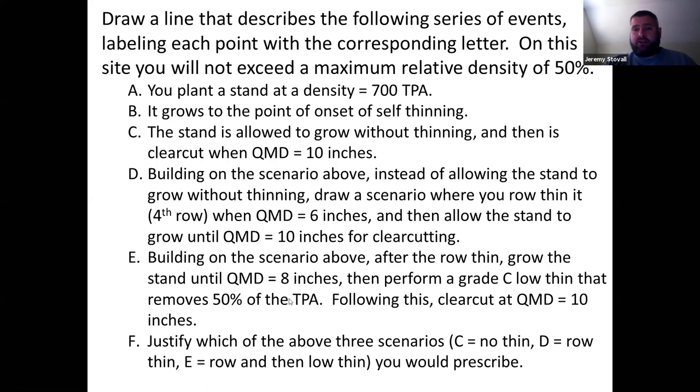Go back to the lecture notes for a couple Thursdays ago. The Thursday we were originally going to do this lab, that lecture in the morning. Go back to that lecture, look at the slides, or go back to the video of the lecture, and I highlighted what you need to know in that video about how a grade C low thin will impact the quadratic mean diameter of your stand. So this is a two thin scenario, row thin and a low thin, followed by a clear cut similarly at a quadratic mean diameter of 10 inches.